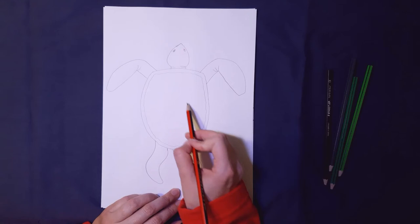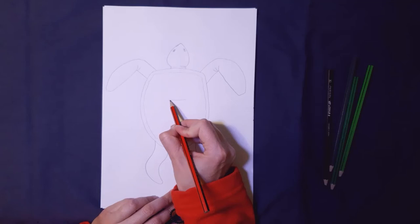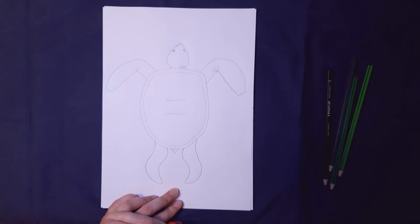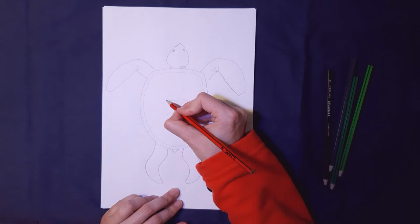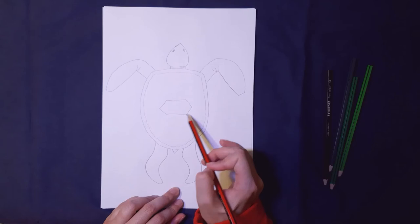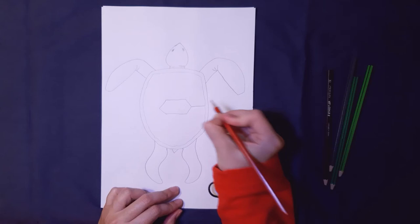We're going to start in the middle of his back, find the middle of his back, and we're going to do two straight lines like that. And we're going to add on two straight lines to make this hexagon shape. A hexagon has got six sides.